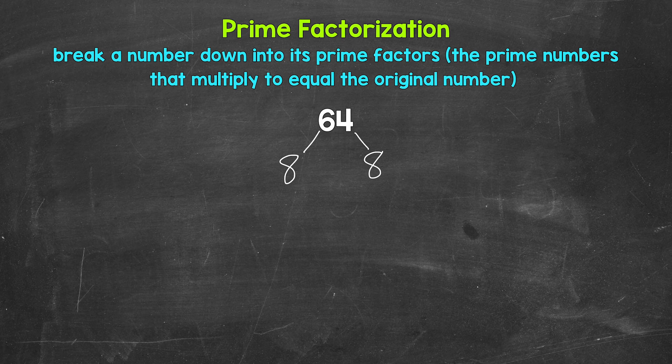Now keep in mind, there are other factors that we could have started with here. For example, we could have started with 2 and 32 — those are factors of 64 — and there are other options as well. These will all work out. Depending on the number, there can be multiple different factors that we can use, so there can be multiple ways to do these. But in the end, we will get the same prime numbers, and that's what's important.